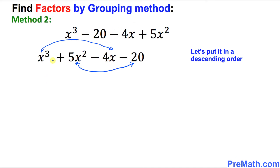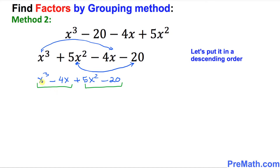So if you rearrange the terms, you can put down x cubed, then negative 4x, then plus 5x squared, minus 20. Now let's go ahead and group them: the first group is x cubed minus 4x, and the second group is 5x squared minus 20. In the first group, x can be factored out as the GCF, leaving us with x squared minus 4. In the second group, 5 is the GCF, leaving x squared minus 4 as well.